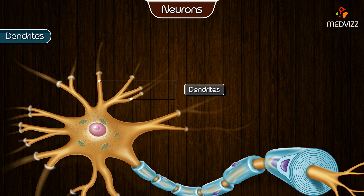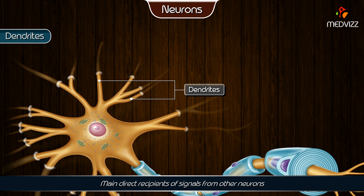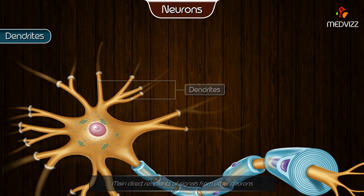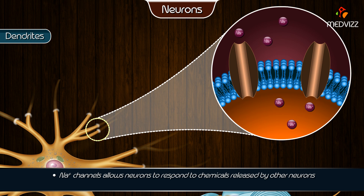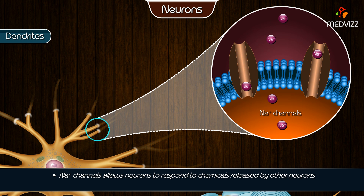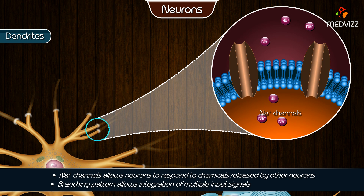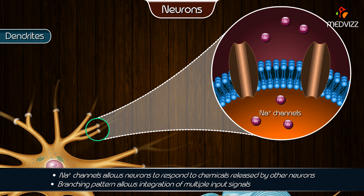Dendrites are tapering and branching extensions of the soma and are the main direct recipients of signals from other neurons. Dendrites have ligand-gated sodium ion channels that allow neurons to respond to chemicals released by other neurons, and their characteristic branching pattern allows for integration of multiple input signals.